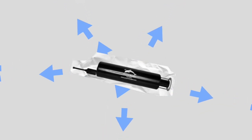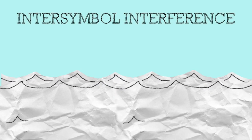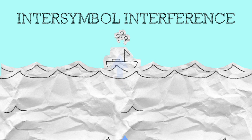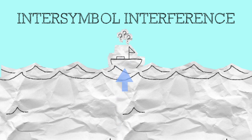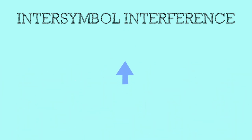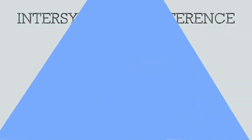The two high-level terms here are intersymbol interference and fading. Intersymbol interference is when the receiver of the data isn't sure if the data coming in is the direct signal or an echo. Each instance of data is referred to as a symbol, and echo makes one symbol interfere with the next — hence intersymbol interference.